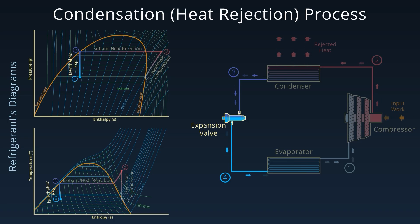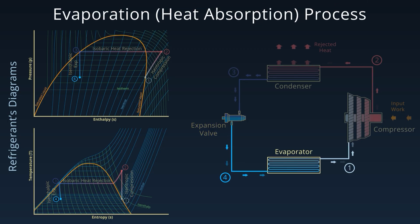At point 4, we have a low pressure liquid vapor mix ready to absorb heat. From 4 to 1, the refrigerant enters the evaporator, where it absorbs heat from the environment or the space being cooled.